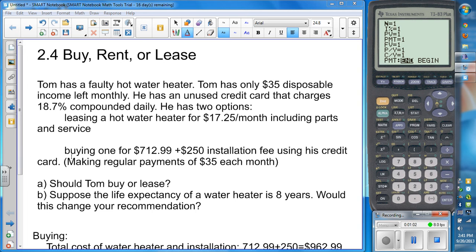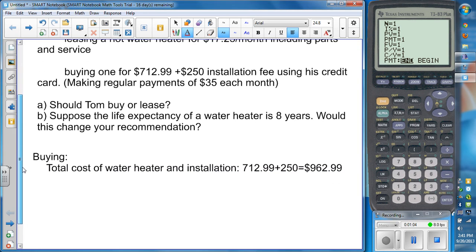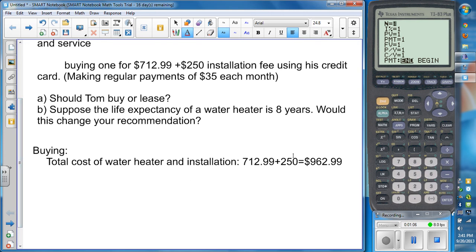Should Tom buy or lease? So the total cost of the water heater and installation is $962.99.